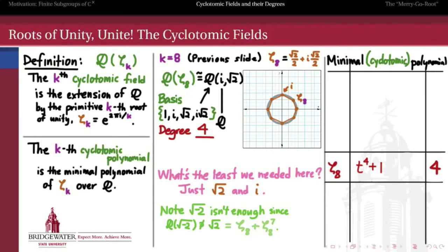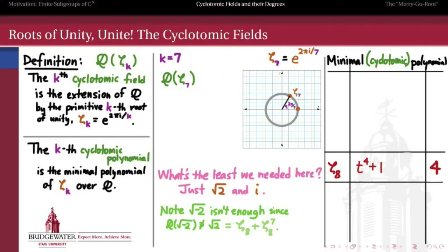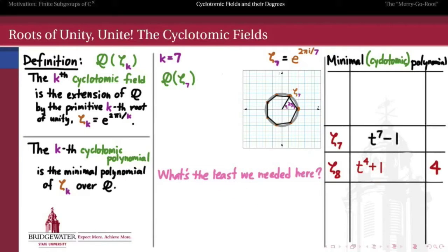In the last video, we found that the 8th cyclotomic polynomial — the minimal polynomial for the 8th cyclotomic field over the rationals — is t to the 4th plus 1, and therefore the 8th cyclotomic field is a degree 4 extension of Q. But the story is very different if we dial back from 8 to 7. If I have the primitive 7th root of unity, e to the 2πi over 7, what does the extension by that over Q look like? We have to include all of its powers, and all the powers of zeta_7 are arrayed in a regular heptagon inscribed in the unit circle. A polynomial that this 7th root of unity satisfies is t to the 7th minus 1. To find the minimal polynomial, we need to find the irreducible factor that zeta_7 is a root of, so we need to factor t to the 7th minus 1.